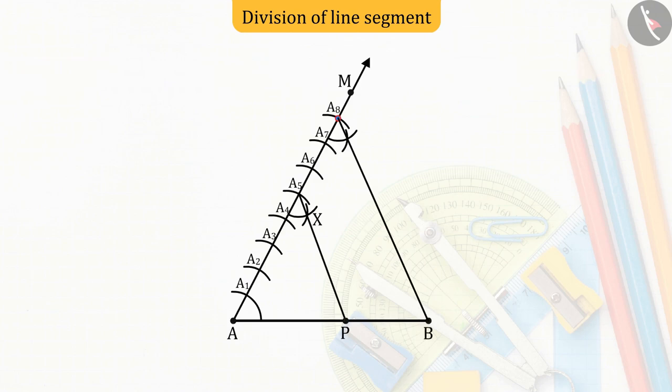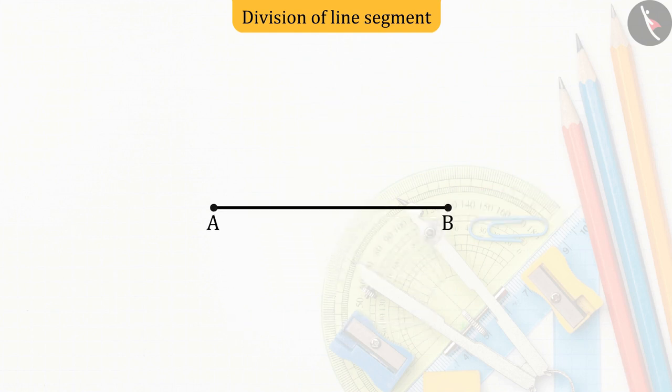You may remember that in the previous video, we divided a line segment into the ratio 5:3. Let us now divide this line again using another method. We have to divide this line AB into the ratio 5:3.